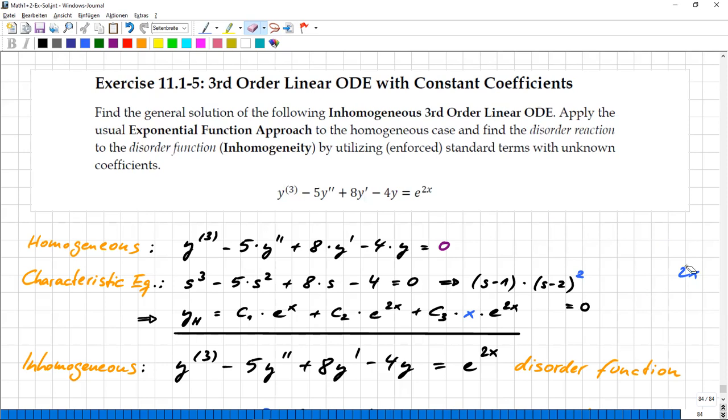If it were even, well, if this were, for example, this were a power of three and we would have a threefold solution, s equals two, then there would even be another term, which would then be c four times x squared times e power two x. So you just count up the exponents of x, of these additional factors of x. You would do so, but this would mean that this has to be a fourth-order differential equation at least. So this is not the case. I just wanted to explain you what would happen in this case.